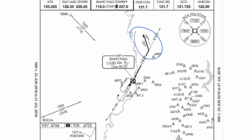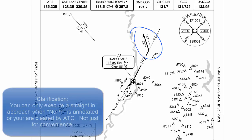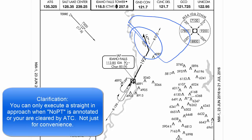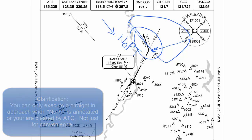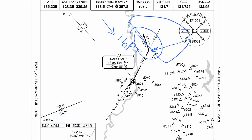You can make a straight-in approach to most different instrument approaches as long as you're coming from an area in this region here where making the procedure turn is not practical. On many charts, you're going to see the notation that says 'No PT' to indicate that whatever radial you're coming to the approach on is one where you do not execute the procedure turn. A straight-in approach is also something that air traffic control is going to clear you for.